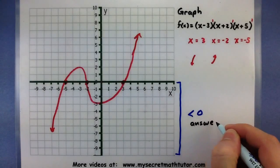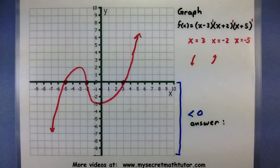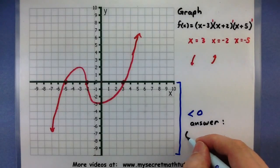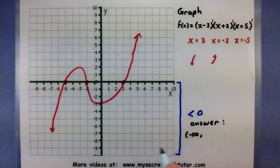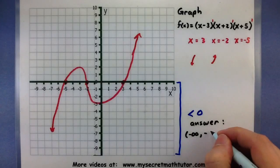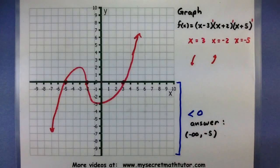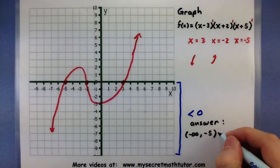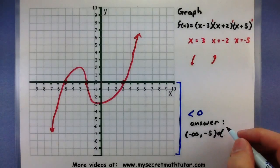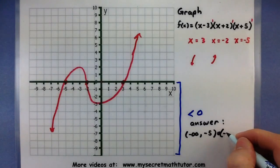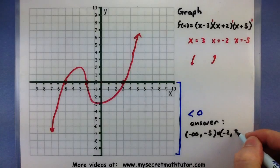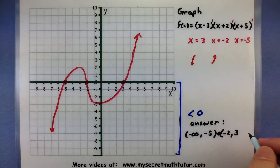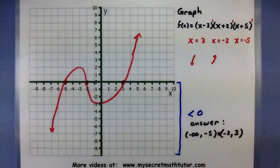So let's go ahead and write down those intervals as our answer. So when we are from negative infinity, all the way up to negative 5, sure enough, our graph will be less than 0. Also, put our little union symbol in there, from negative 2 up to 3, it will also be less than 0.